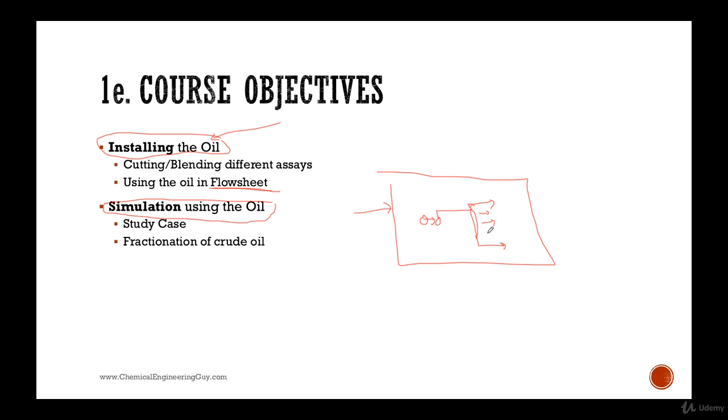So we see how in real life, or at least in the simulation, the distribution plot will be seen. This will be light gases, this will be naphtha, kerosene, diesel, and this will be the residual.